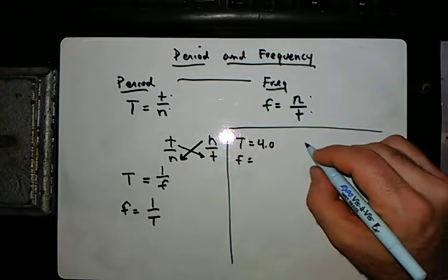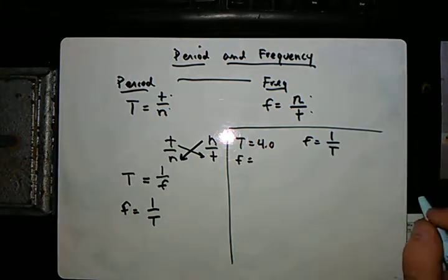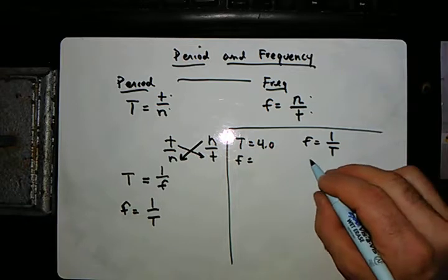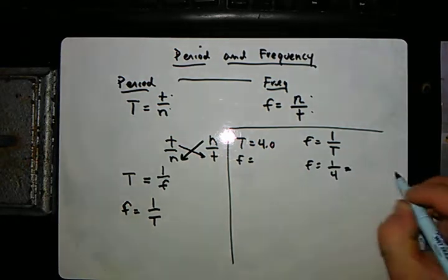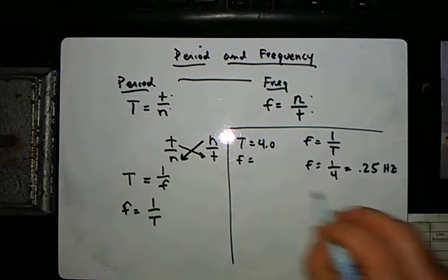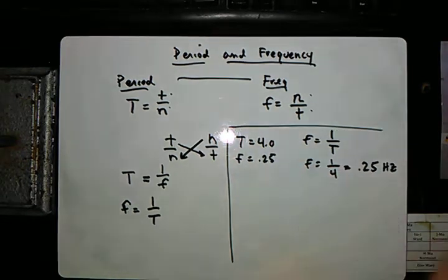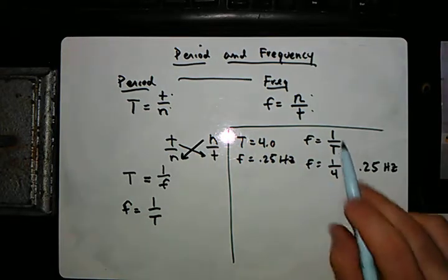We know that frequency is equal to 1 over the period. So if that's the case, then frequency is 1 over 4 and it's 0.25 hertz. So the answer is 0.25 hertz. The frequency is 1 over the period.